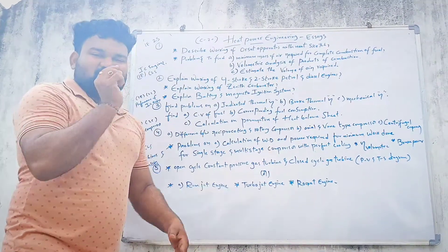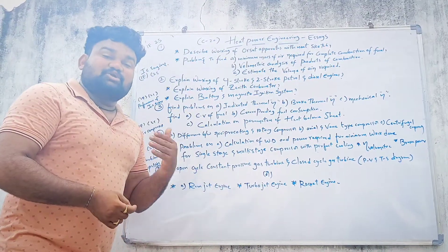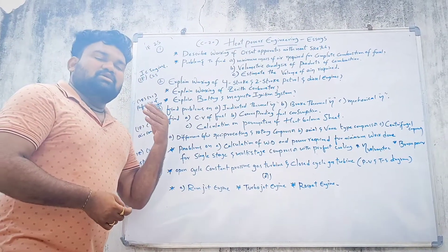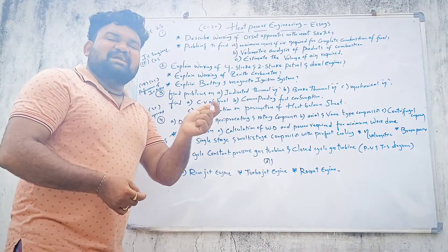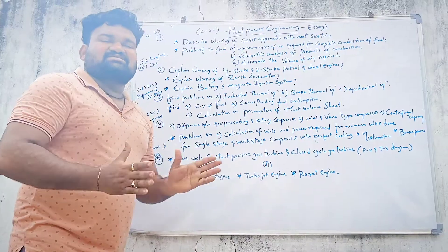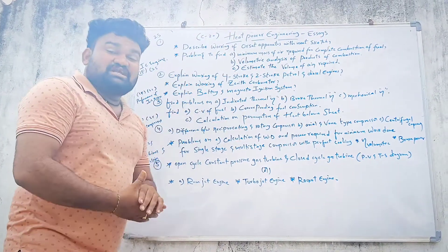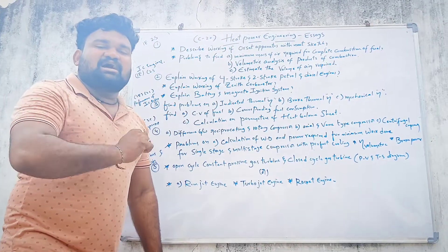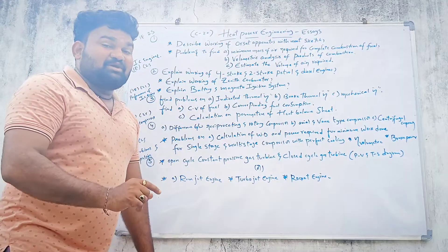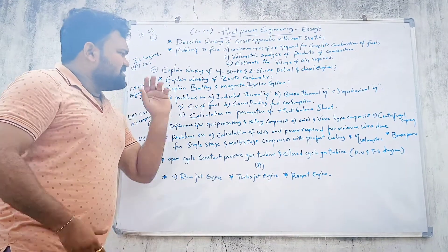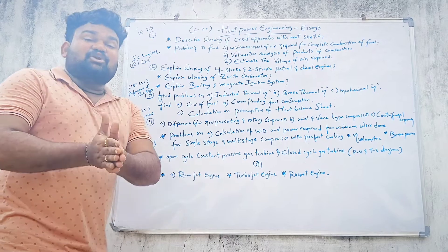The diagrams for the 2-stroke petrol engine and 2-stroke diesel engine remain the same. The third question covers the battery ignition system and magneto ignition system — what is the energy load and how the valve control works in each.